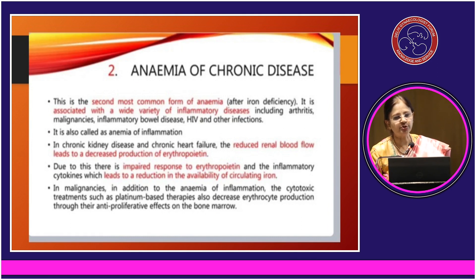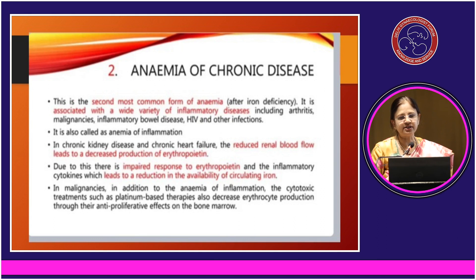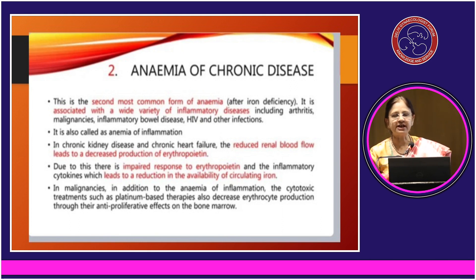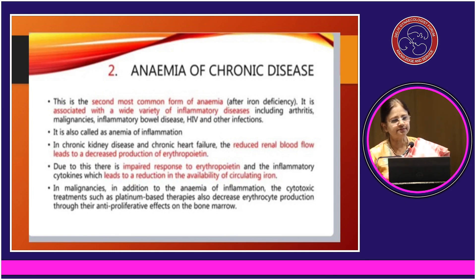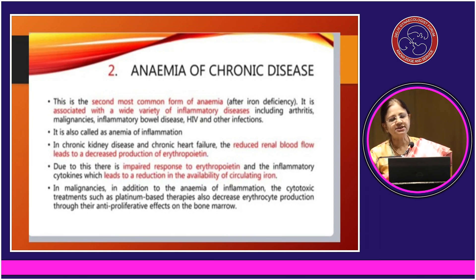Coming to the second most common form of anemia besides iron deficiency — anemia of chronic diseases. It is associated with a wide variety of inflammatory diseases like arthritis, malignancy, inflammatory bowel disease, HIV, and other infections. It is also called anemia of inflammation, and is seen in chronic kidney disease and chronic heart failure, where reduced renal blood flow leads to decreased production of erythropoietin, impairing red cell production. In malignancies, cytotoxic drugs used are also an important cause of anemia.